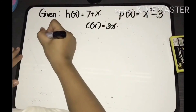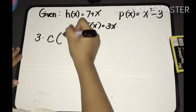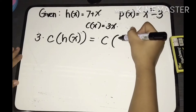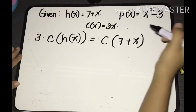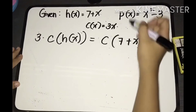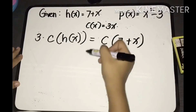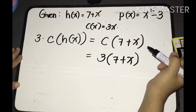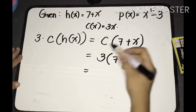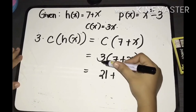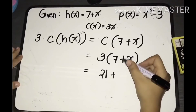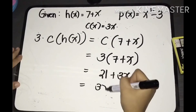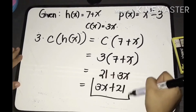For the third example, we find c of h of x. Copy the function c, then substitute h of x, which is 7 plus x. We substitute 7 plus x into the variable of the function c: 3 multiplied by (7 plus x). Distributing 3: 3 times 7 is 21, plus 3 times x is 3x. Written formally, the final answer is 3x plus 21.